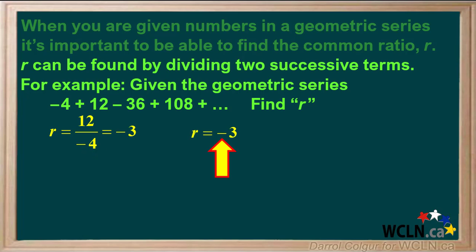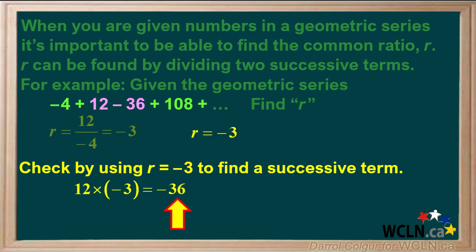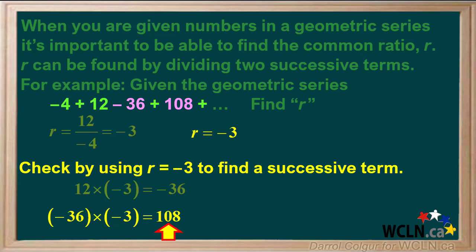So we can state that R equals negative 3. We will check by using R equals negative 3 to find a successive term. For example, the second term, 12, times negative 3 equals the third term, negative 36. And the third term, negative 36, times negative 3 equals the fourth term, positive 108.